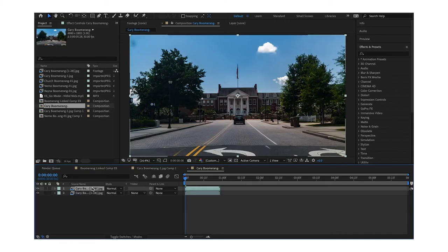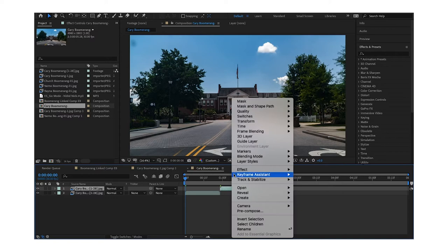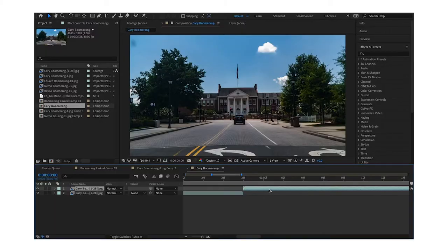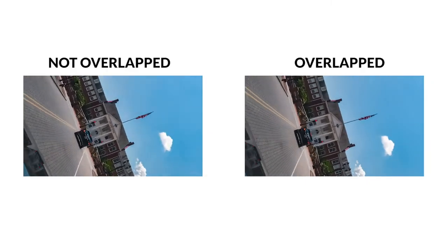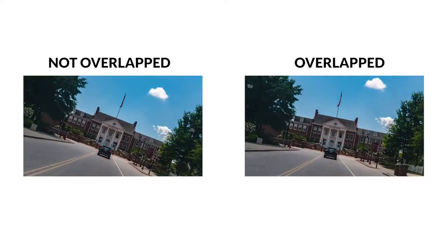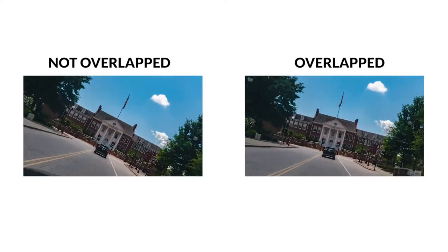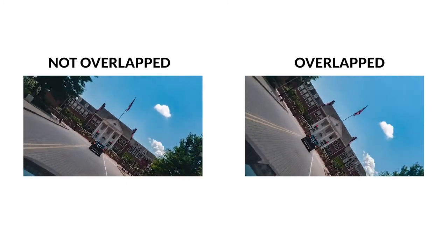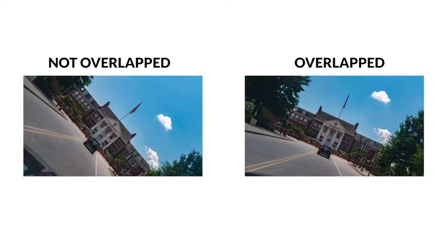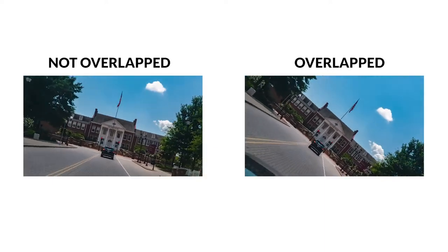Once you have your video — whether you added the rotation during shooting or in editing — you want to make a duplicate of that video, move it over, and reverse it. Put that second clip in reverse, then overlap it by one frame over the original clip. The reason you overlap by one frame is that without it, you'd have one frame that's duplicated, making it look less than a smooth boomerang. Overlapping by one frame treats it as a single frame instead of two identical frames, and then it loops back and forth seamlessly.